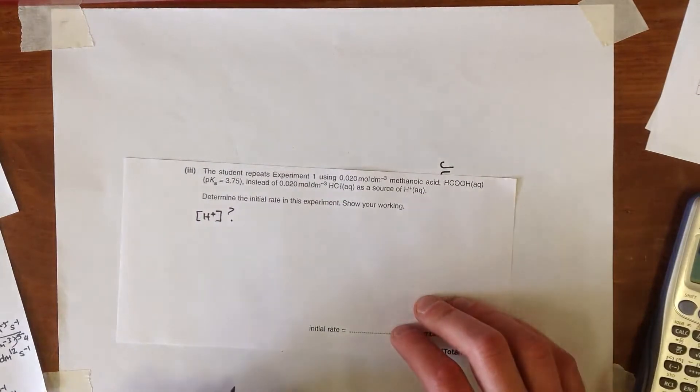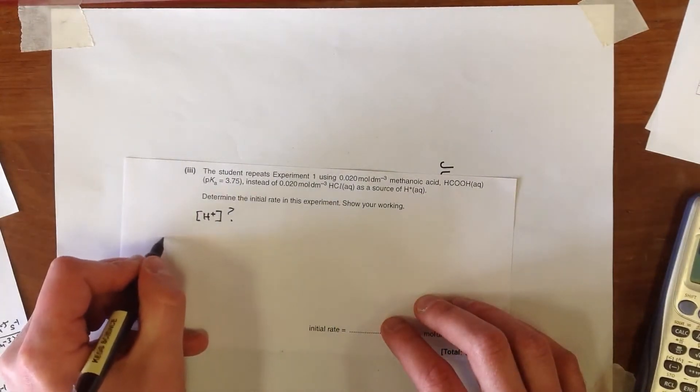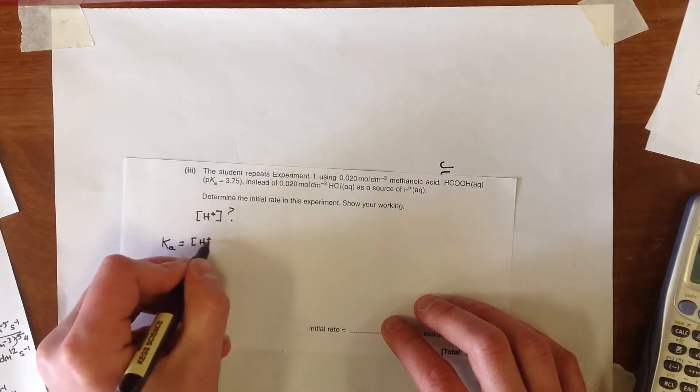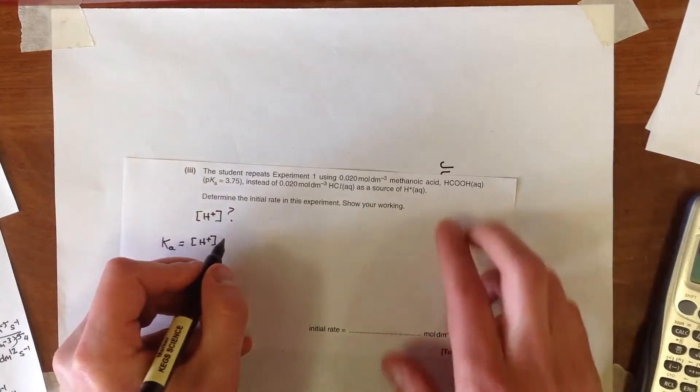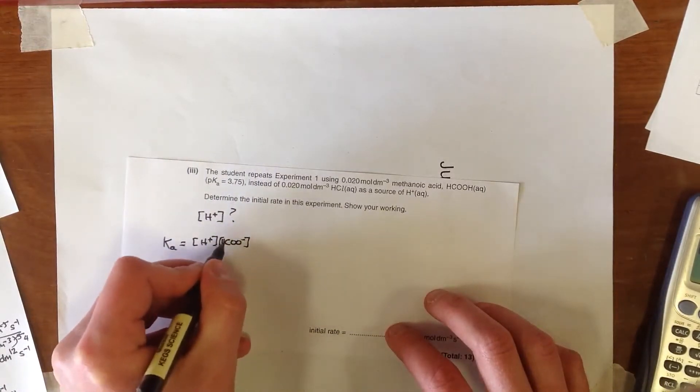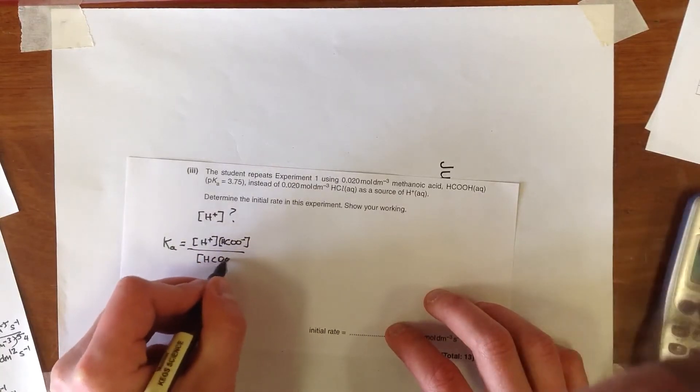So to determine the initial rate in the experiment, what we're going to do is need to work out what that concentration of H+ actually is. That's our goal. And so the first thing we can do is remember that the Ka of an acid, if we've got a weak acid, is H+, times, in this case, as it's methanoic acid, we need the conjugate base of that acid, which is HCOO minus, divided by HCOOH.